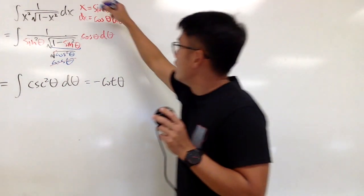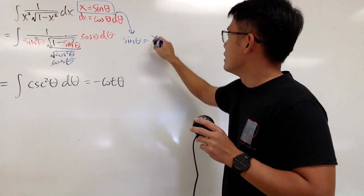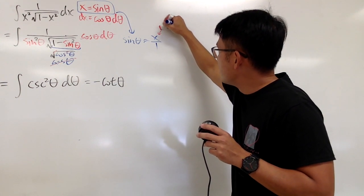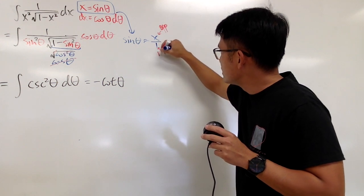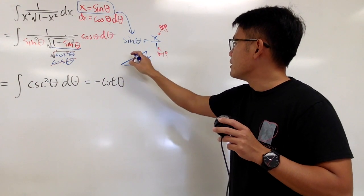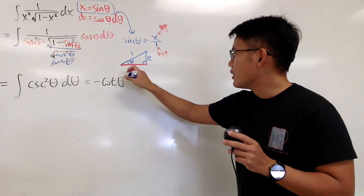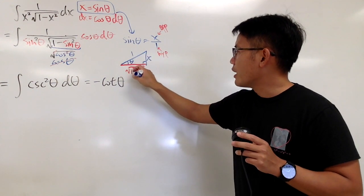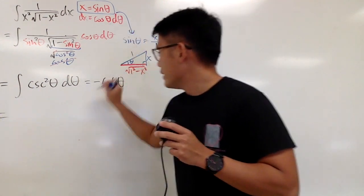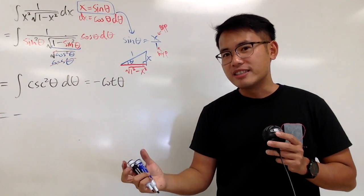Looking back at our substitution: sine theta equals x, which I write as x over 1. So the opposite side is x and the hypotenuse is 1 — let's draw the right triangle. The adjacent side is the square root of hypotenuse squared minus the opposite squared, which gives us square root of 1 minus x squared. The angle is theta. Cotangent is adjacent over opposite.